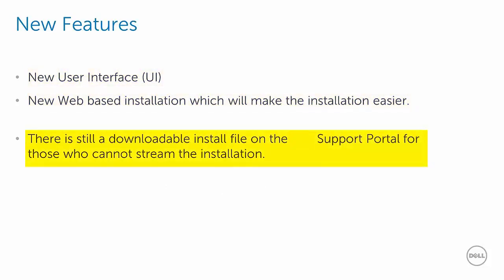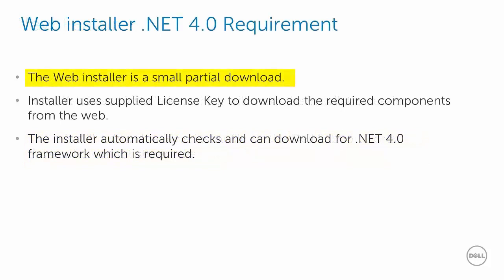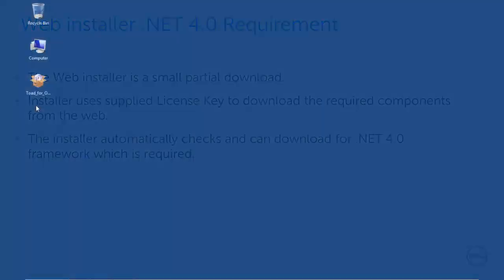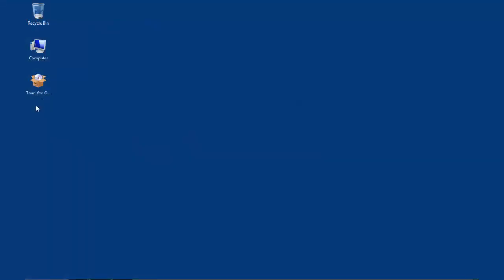For those who cannot stream the installation, there is a downloadable install file on the support portal. The web installer is a small partial download to the PC. When executed, it will check the supplied license key and download the required components from the web. The installer also checks for .NET 4.0 which is required. If .NET 4.0 is not present, the installer can download and install .NET 4.0.